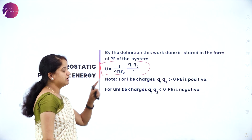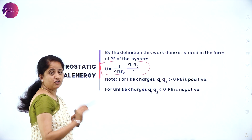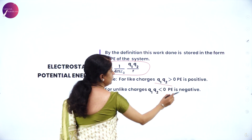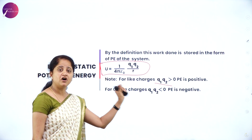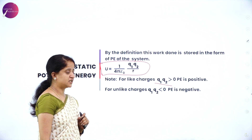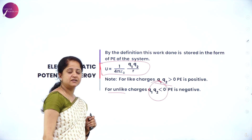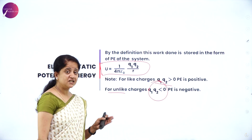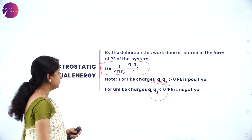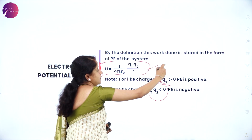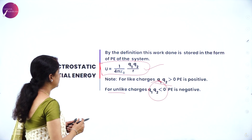This total work done is stored as potential energy, denoted by U. So U = (1/4πε₀) Q1Q2/R. For like charges Q1Q2 > 0, giving positive potential energy; for unlike charges Q1Q2 < 0, giving negative potential energy. This is the expression for electrostatic potential energy for a system of two charges.